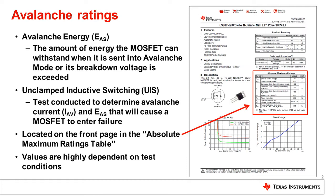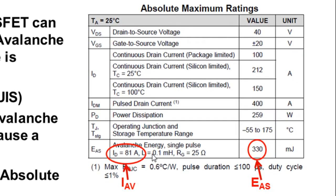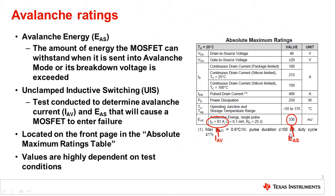Most FET datasheets will include this parameter in their absolute maximum ratings table, which in our case is located right on the front page of our datasheet. Specifically, you can see the parameters here: avalanche current and avalanche energy EAS. Avalanche energy is defined as the amount of energy the MOSFET can withstand when it is set into avalanche mode, or its breakdown voltage is exceeded.